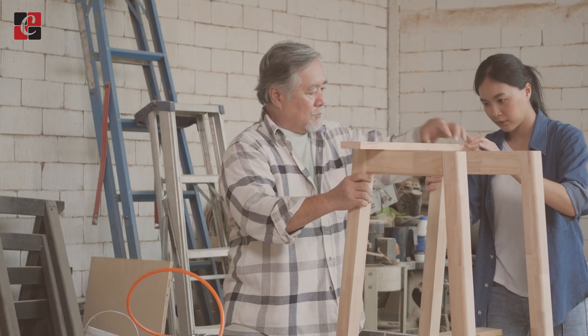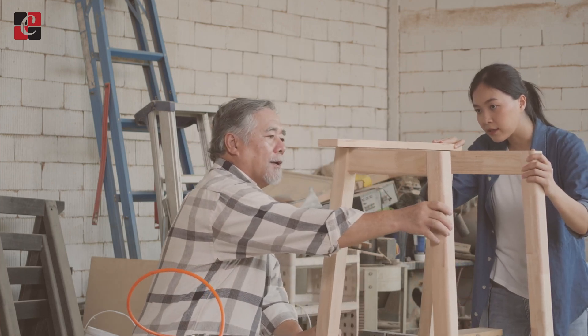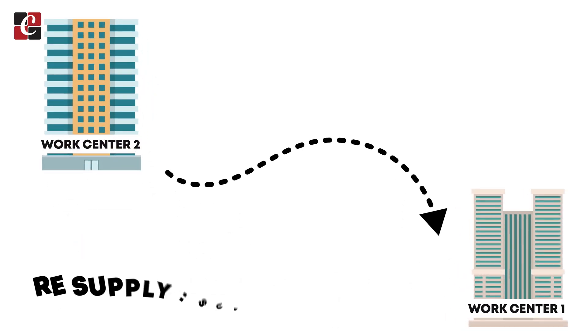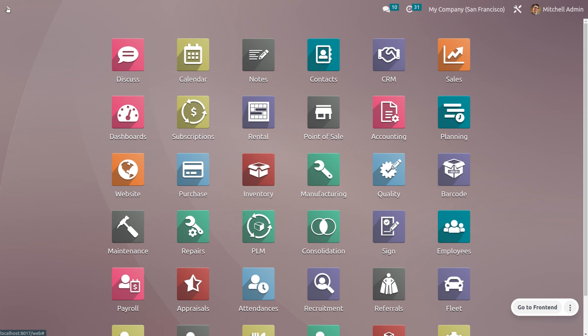Welcome back. We are going to manufacture a wooden chair. To do so, we require the following components: wooden panel and screw. These components will be supplied from one company to another via subcontracting. Once production is over, the manufactured product will be sent back. We send raw materials to the subcontractor so they can manufacture the finished products and send them back to us, allowing us to keep finished products in inventory without making them ourselves.